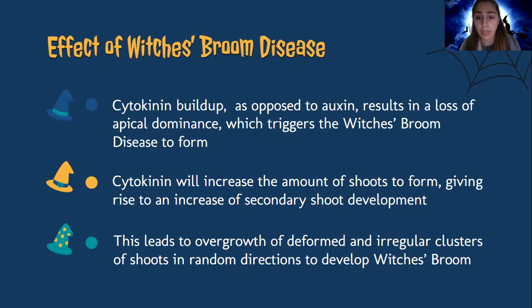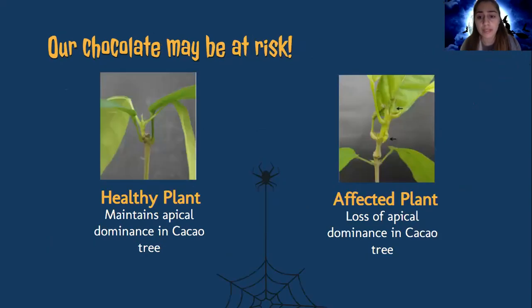Cytokinin will increase the amount of shoots to form, giving rise to an increase of secondary shoot development. This leads to overgrowth and deformed, irregular clusters of shoots in random directions, further developing Witch's Broom disease on the plant. The cacao tree, where we get our chocolate, is famously affected. On the left we see a healthy plant maintaining apical dominance with no extra growth. On the right, the affected plant is starting to grow additional shoots due to loss of apical dominance in the cacao tree.